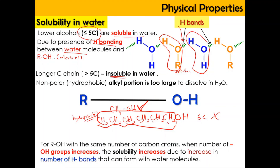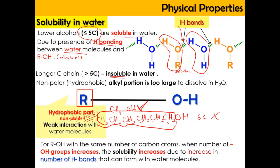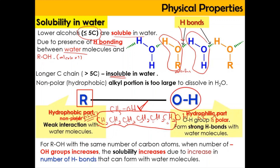Hydrophobic means it repels water, so it is very unlikely to dissolve. The OH group is polar and forms stronger hydrogen bonds with water, but for longer chains the large hydrophobic alkyl part dominates. However, for ROH with the same number of carbon atoms, when the number of hydroxyl groups increases, solubility increases due to the increased number of hydrogen bonds. More hydroxyl groups means more hydrogen bonding with water, so the compound is more soluble — similar to the comparison of ethanediol and ethanol.